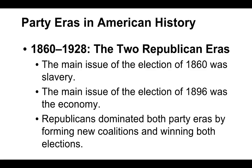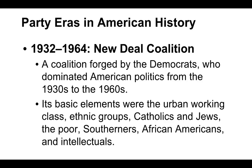From 1932 to 1964, this is known as the New Deal era or the New Deal coalition — forged by the Democrats who dominated politics from the 30s to the 60s. The basic elements make up people that still follow relatively the Democratic Party today: Catholics, Jews, poor people, Southerners (not so much anymore), African Americans, and intellectuals. The Southerners would leave in the 60s because of the Civil Rights Movement and the Democrats' support of civil rights.